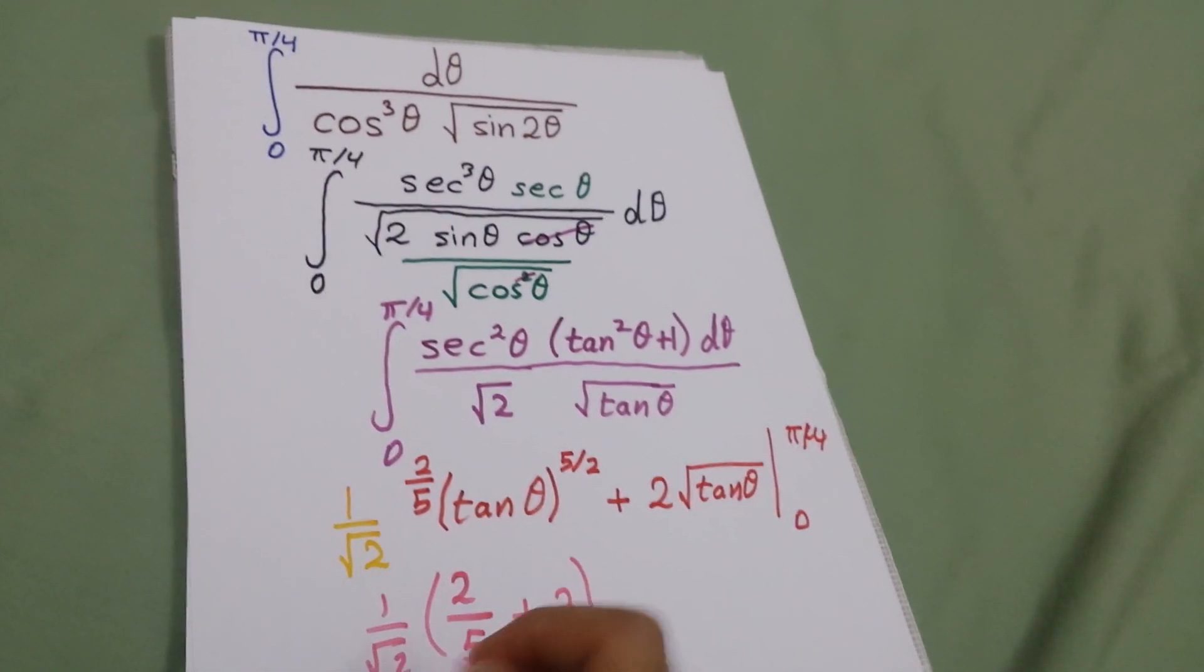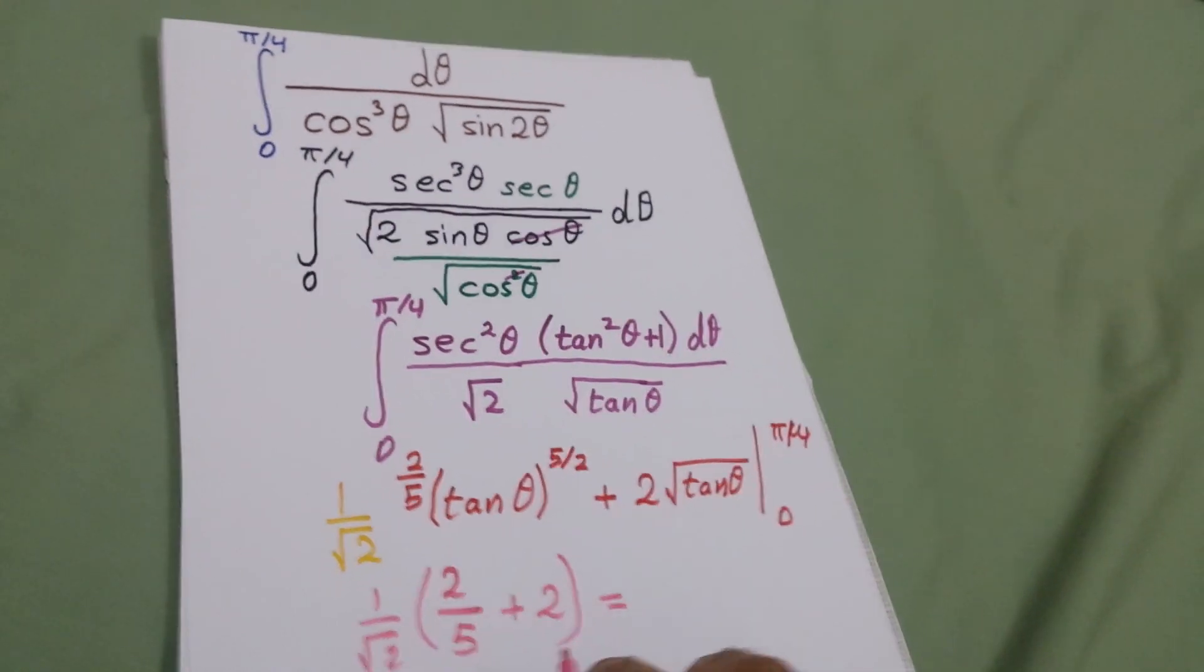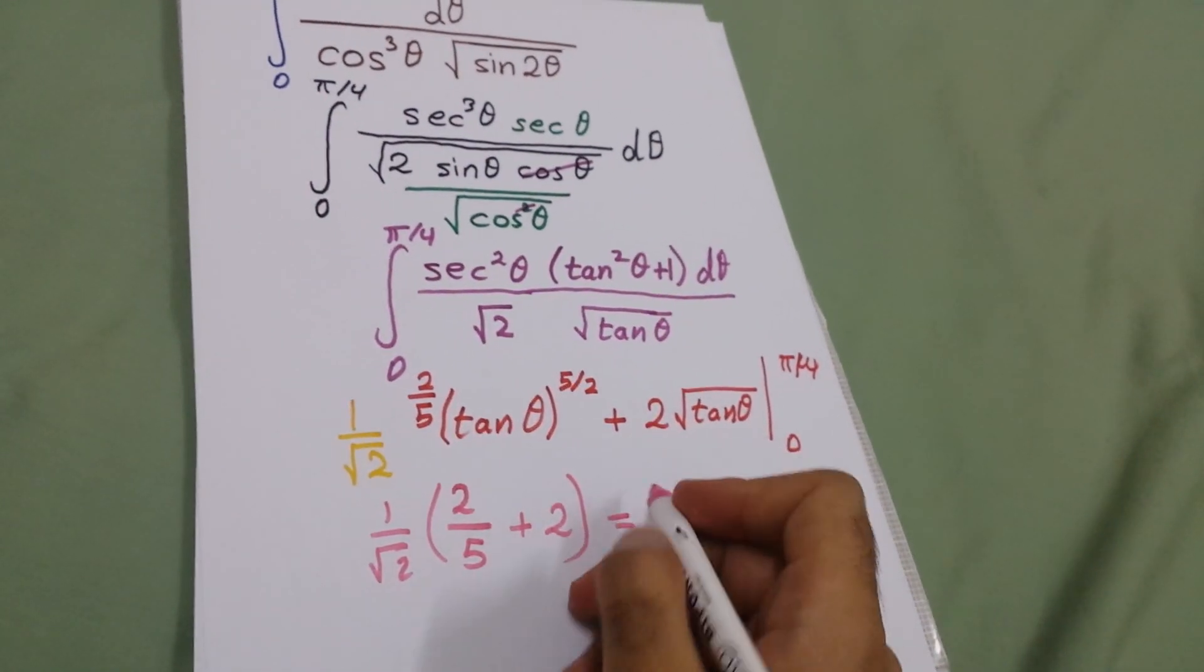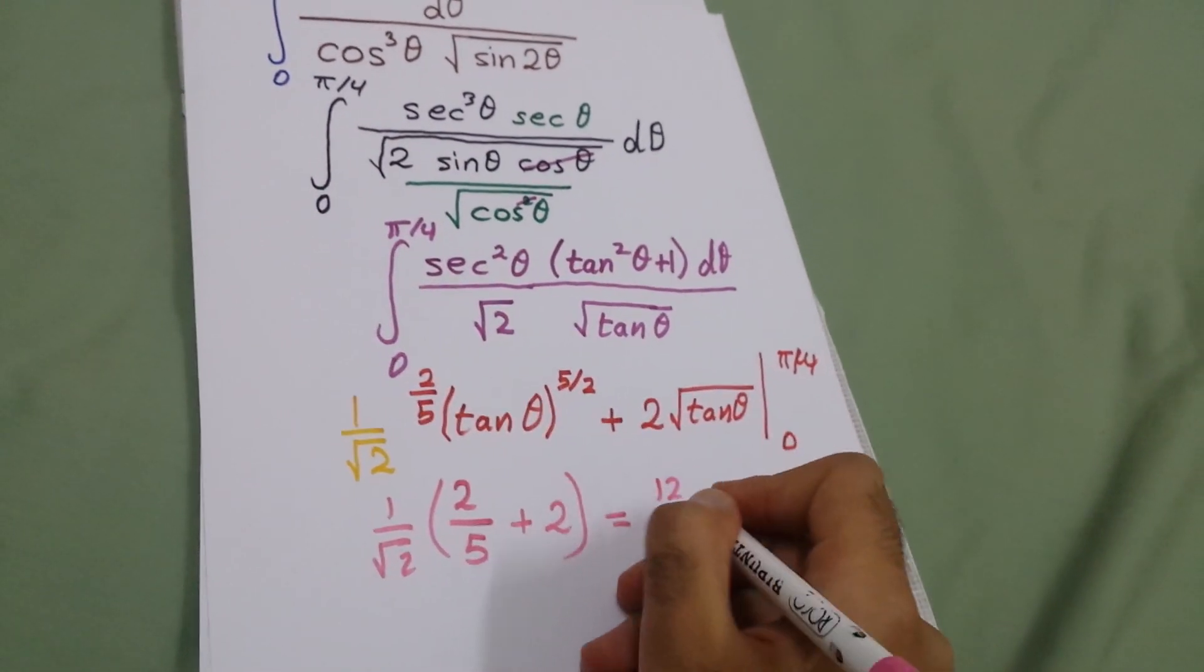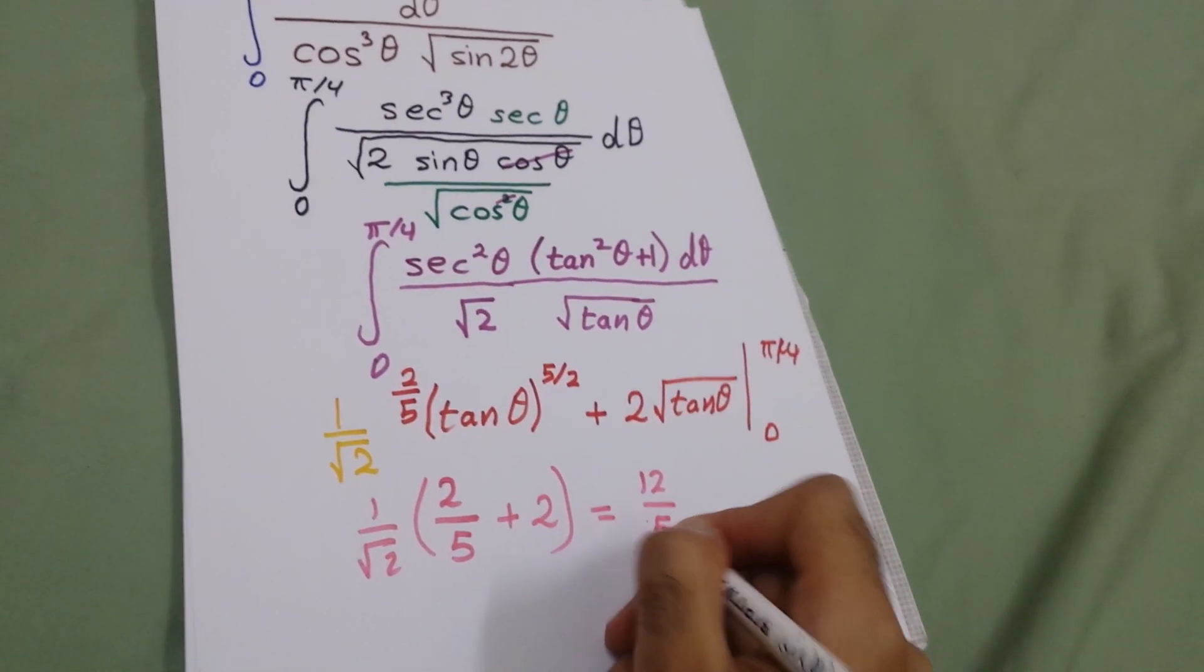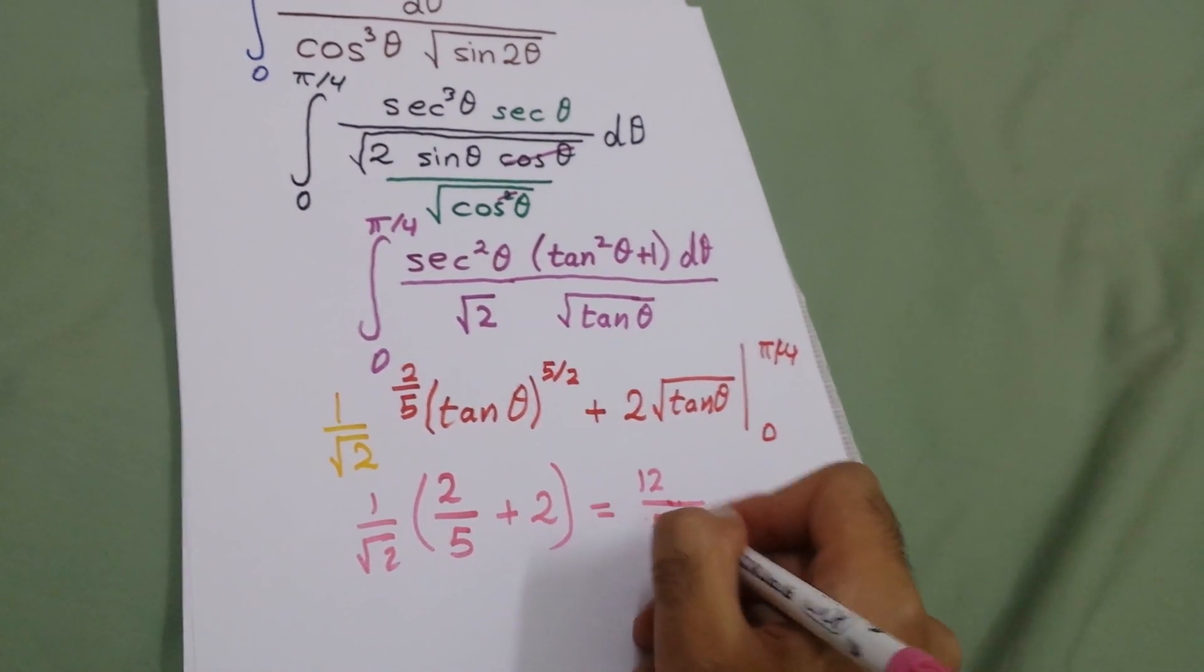So we will have 2 over 5 plus 2 times 1 over square root of 2. This is the final answer: it will be 12 over 5 square root of 2.